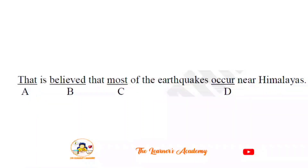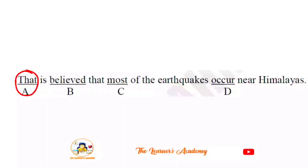Sentence four: 'That is believed most of the earthquakes occur near the Himalayas.' The error is in option A — 'that is believed' is incorrect. The correct structure is 'it is believed that.' So the corrected sentence reads: 'It is believed that most of the earthquakes occur near the Himalayas.' The grammar error here is the use of 'that' instead of 'it.'